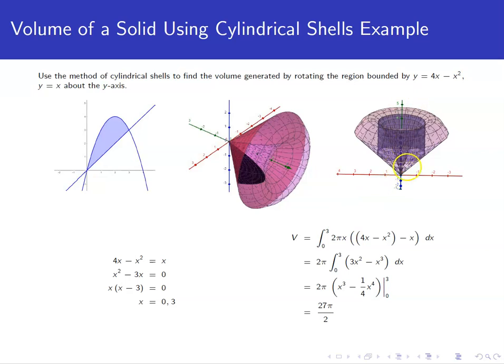Where does the shell get its height? Well, the height is going to be coming from the difference between top and bottom curves for our region. So, the height in this case, the top curve is 4x minus x squared, the bottom curve is x. So, 4x minus x squared minus x is the height of the shell.